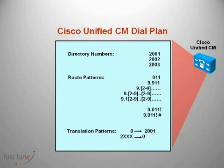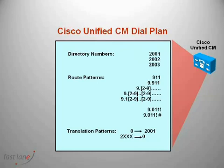Firstly, let's have a look at the process of making a call on Communications Manager. Like any telephone system, it contains a dial plan. The dial plan contains reachable numbers. In the case of Communications Manager, we have three types of numbers in the dial plan.